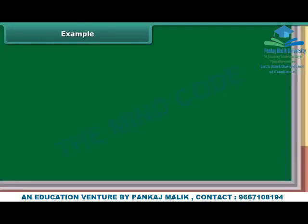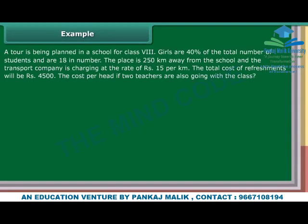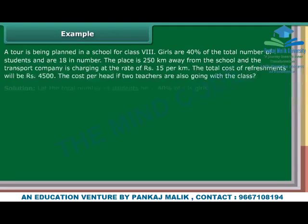Example. A tour is being planned in a school for class 8. Girls are 40% of the total number of students and are 18 in number. The place is 250 km away and the transport company charges Rs. 15 per km. The total cost of refreshments will be Rs. 4,500. Find the cost per head if two teachers are also going with the class. Solution.